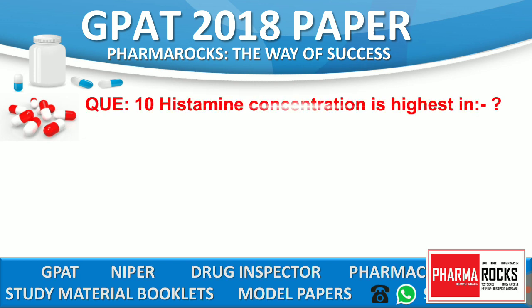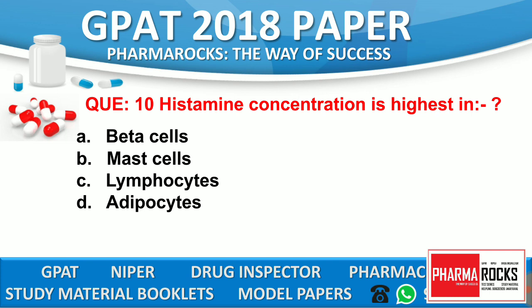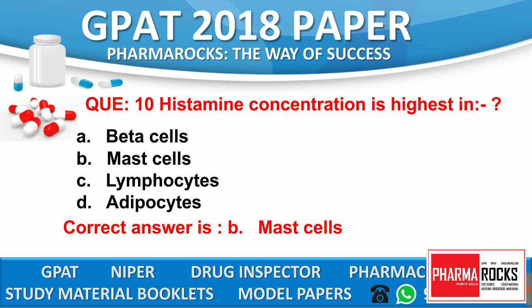Question number 10: Histamine concentration is highest in which cell? The correct answer is option B — mast cell. Histamine concentration is the highest in the mast cell.